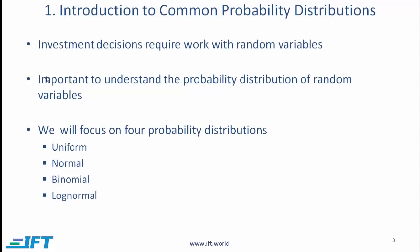Investment decisions require work with random variables. If you consider a basic investment decision — whether or not to buy a stock — we need to consider what the expected return will be. The expected return might be 12%, but this does not mean the return will actually be 12%. It simply means we are expecting 12% and the actual return will vary around that — it might be more, less, or even negative. So the return is a random variable, and it is important to understand how it might be distributed. The probability distribution function of random variables is what we will study in this reading.